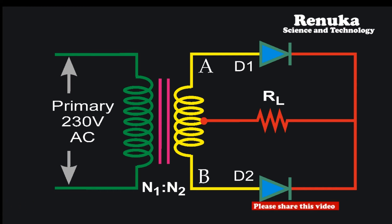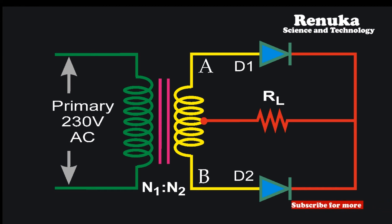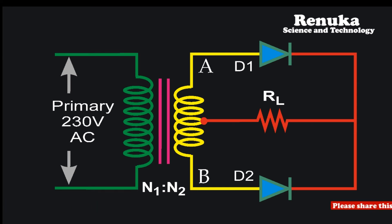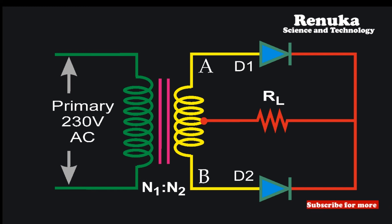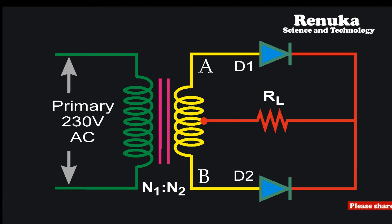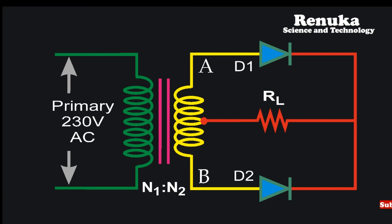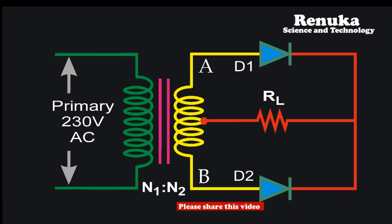In a center tap transformer, the number of turns at the secondary is equally divided, and a terminal is connected at the middle of the coil — this connection is called tapping. Since this tapping is at the center of the coil, this transformer is called a center tap transformer. In this special transformer, there are three tappings at the secondary. The center tapping is at ground potential (zero volts), while the other two tappings provide equal and opposite voltages.